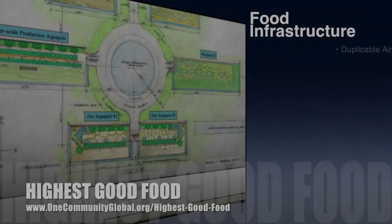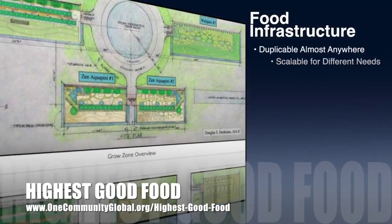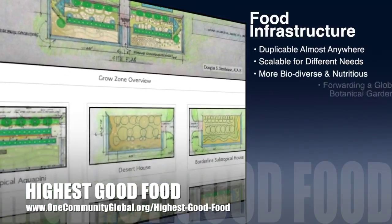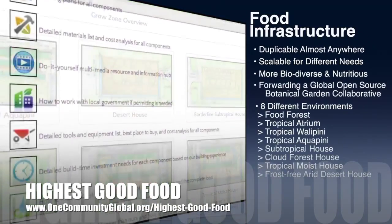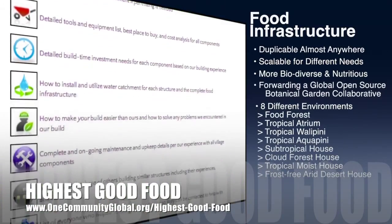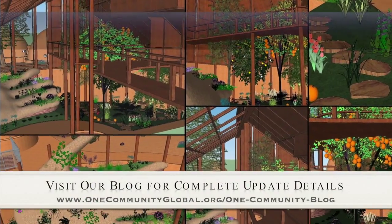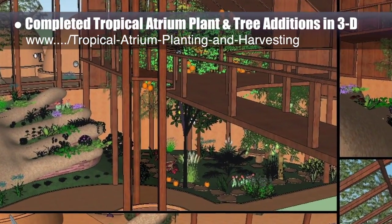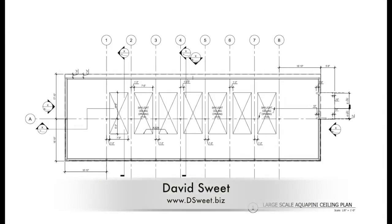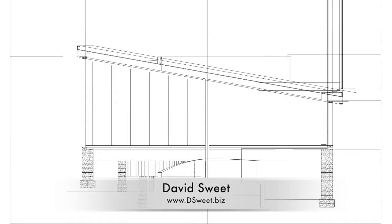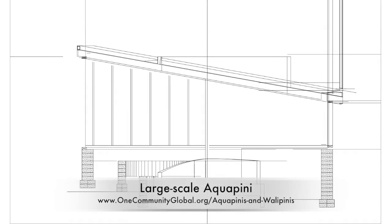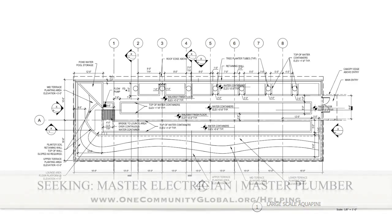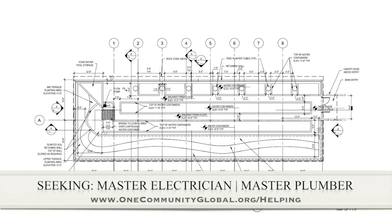OneCommunity's approach to highest good food is duplicable almost anywhere, scalable for different needs, more biodiverse and nutritious, part of forwarding a global open source botanical garden collaborative, and begins with creating eight different free, shared, and duplicable growing environments. This last week in Highest Good Food, the core team finished adding all the tropical atrium plants, trees, and slopes by the pathway in 3D. David Sweet also completed the initial roof plan layout and cross sections in CAD for the large scale Aquapini. We are seeking a master electrician and a master plumber to help in this area.